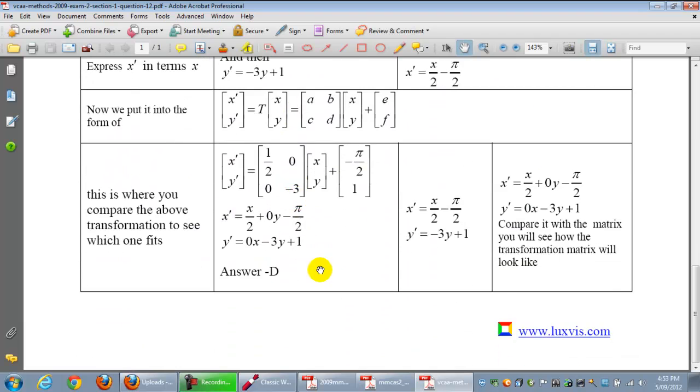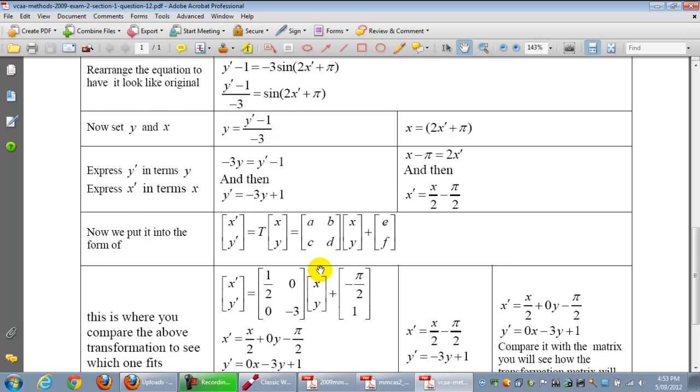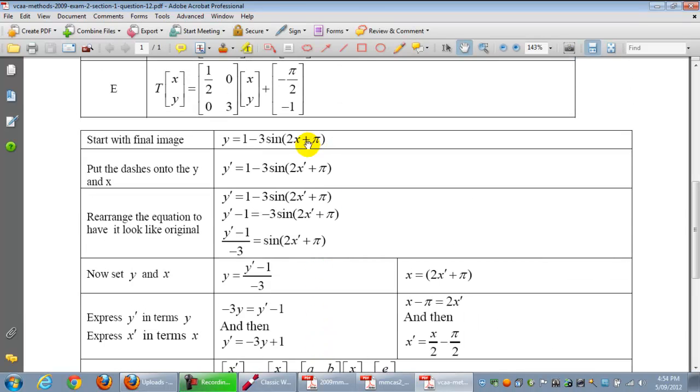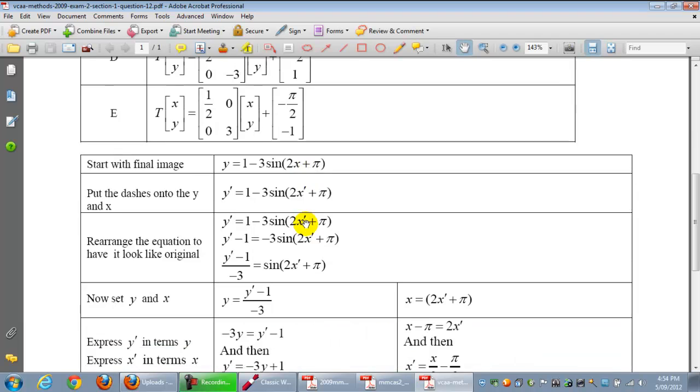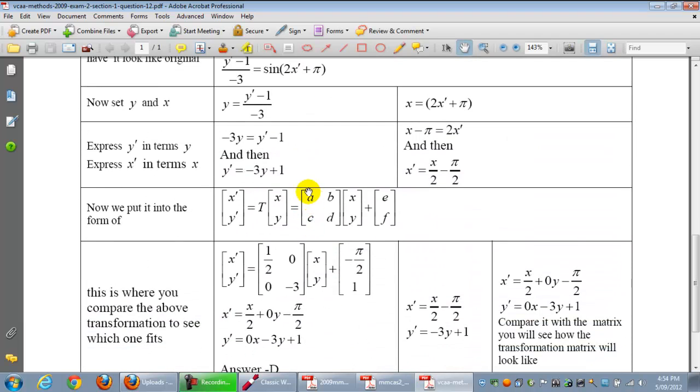Where was the difficulty here? The difficulty was not in rearranging it and going backwards. But the difficulty was once you got to this point and you wanted to put it into this form here.